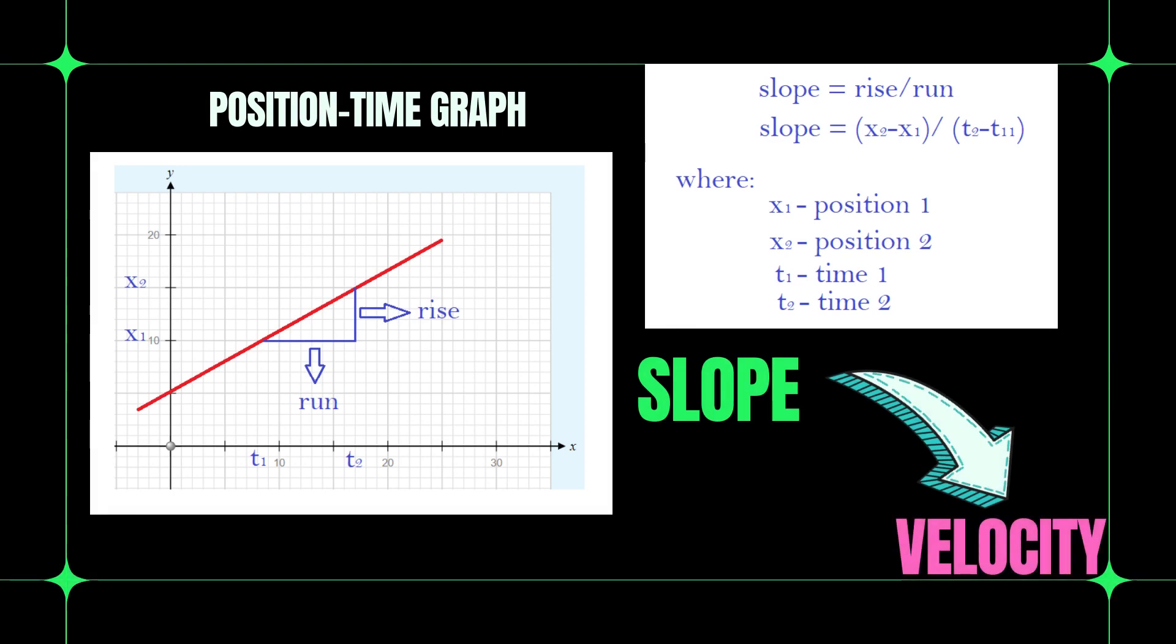We are now going to apply that concept in physics specifically in position time graph. Let us represent position by letter x. x sub 2 is the final position while x sub 1 is the initial position. It is found in y-axis. Time is represented by letter t. It is in second. Take note that slope in a position time graph represents velocity.